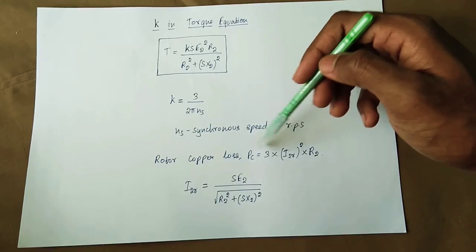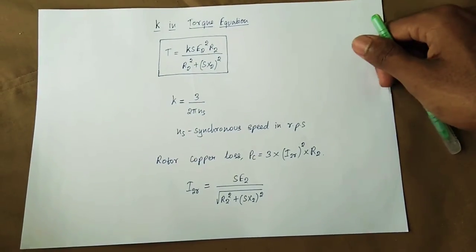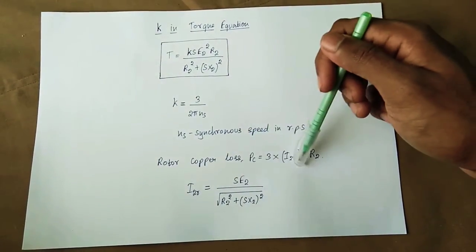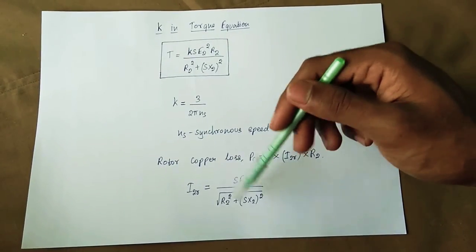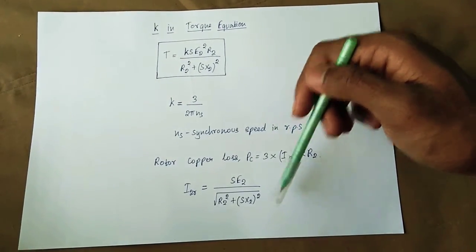For the proof, the rotor copper loss P = 3 × I₂² × R₂, and I₂ = s·E₂ divided by root of (R₂² + (sX)²).